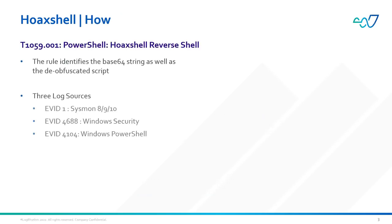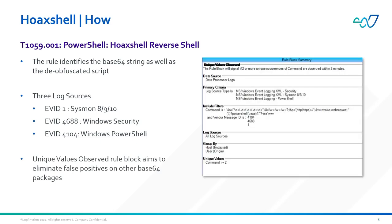Whilst this was being talked about, LogRhythm's co-pilot team sprang into action, creating a rule that was designed to identify both the obfuscated base64 string and the de-obfuscated PowerShell script that the HoaxShell approach uses.